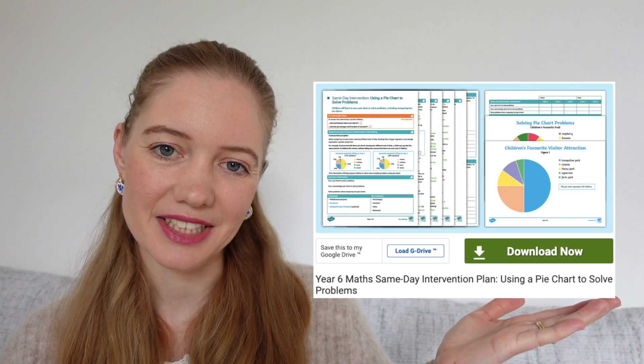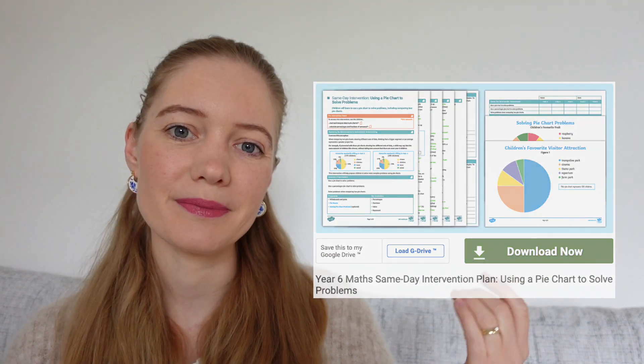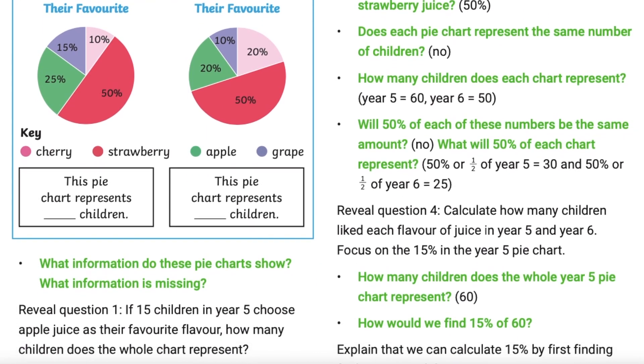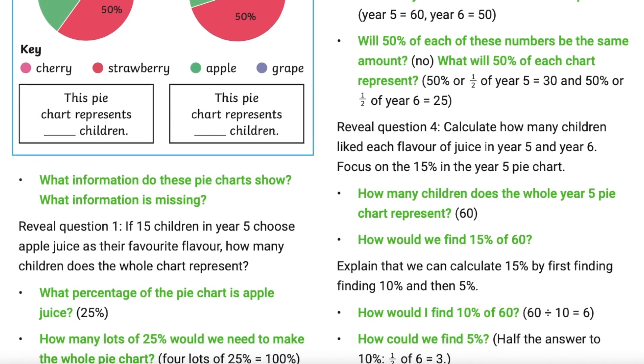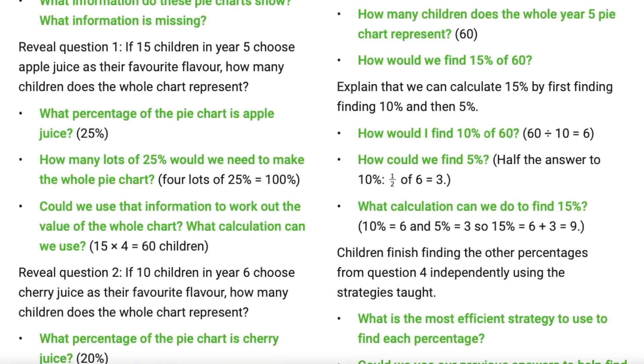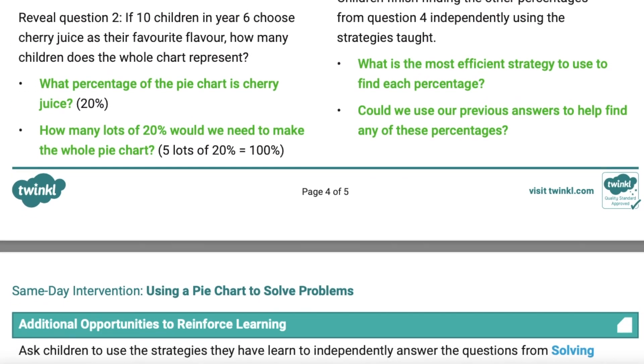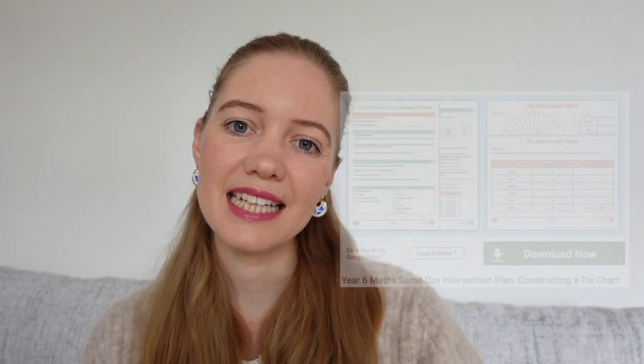In this using a pie chart to solve problems same day intervention, the questioning guides children through how to use halving and quartering to find the value represented by the different sections of the pie chart. They go on to look at how to find the value of the entire chart from a part of it, use percentages to solve problems and solve problems when comparing pie charts.